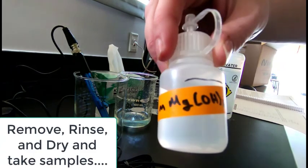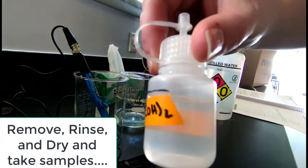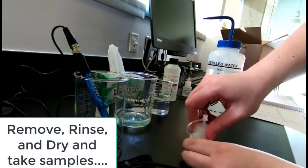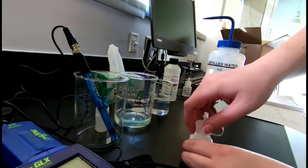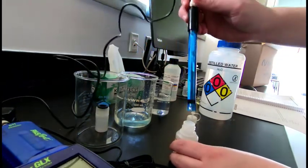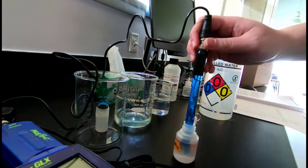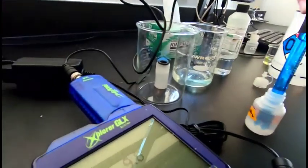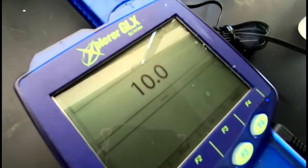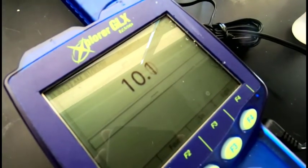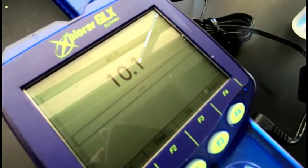And so now we're going to just do a measurement. It's been calibrated. And we're going to actually do a measurement of the 0.03 magnesium hydroxide. And this is an example.